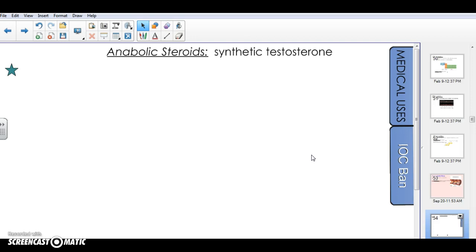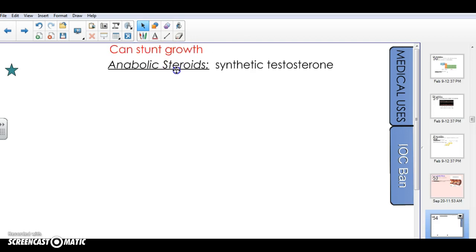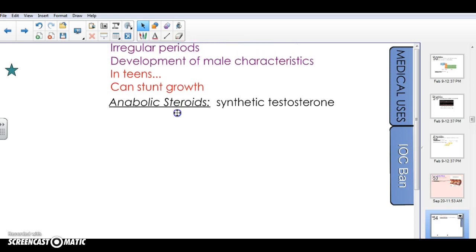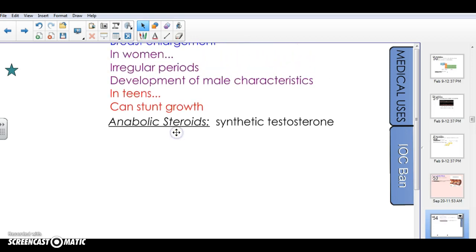If you take anabolic steroids and you don't have a necessary medical need for it, here's some things that can happen. It can stunt your growth, especially in teenagers that take it. For women that take anabolic steroids, you can have irregular periods and start to develop some male characteristics like voice deepening and hair growth in places you wouldn't necessarily have as a woman.